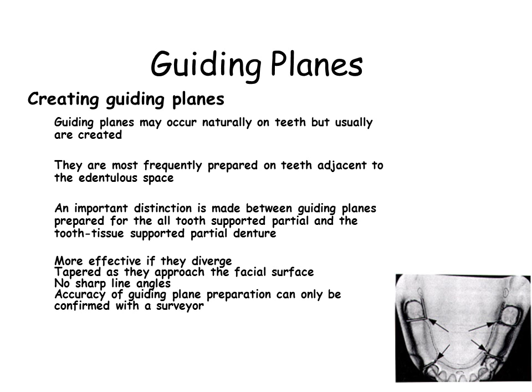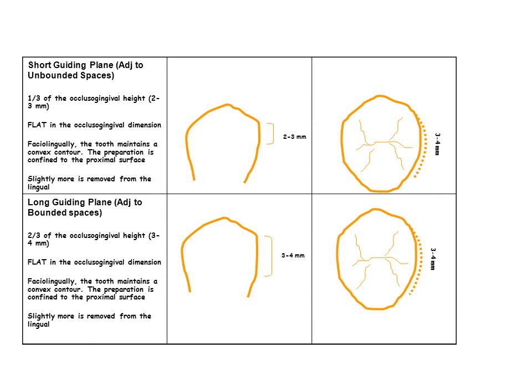Guiding planes are either long or short. Long guiding planes are used adjacent to tooth-bound spaces, while short guiding planes are used adjacent to extension bases. Both follow the external buccolingual convex contour of the tooth, with slightly more removed buccolingually to make the proximal plate thicker. They are flat in the vertical dimension and mutually parallel with other guiding planes.